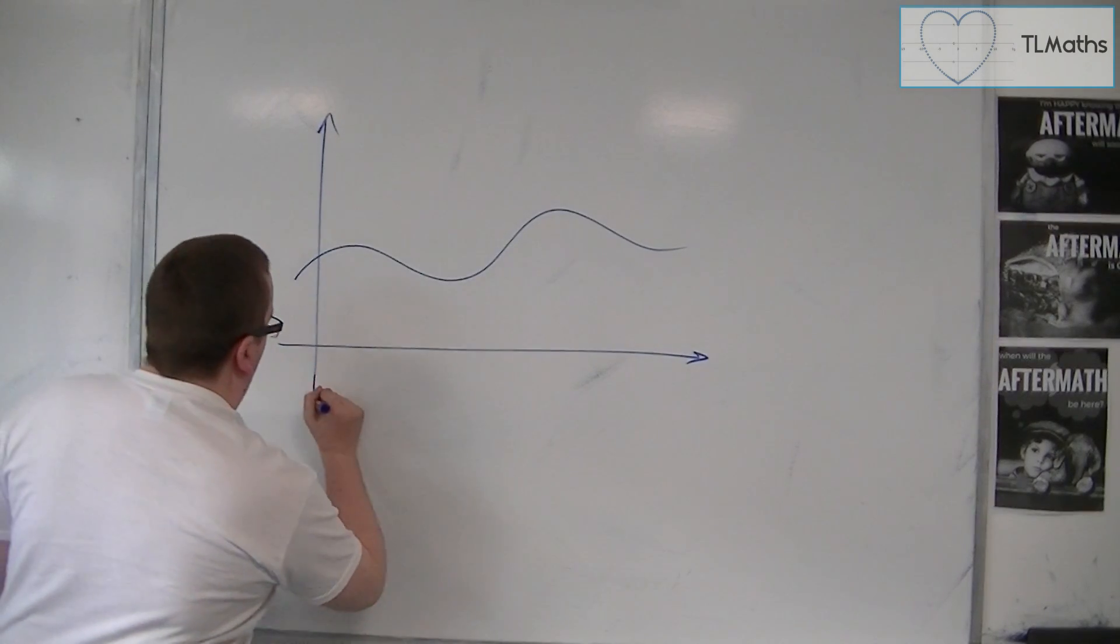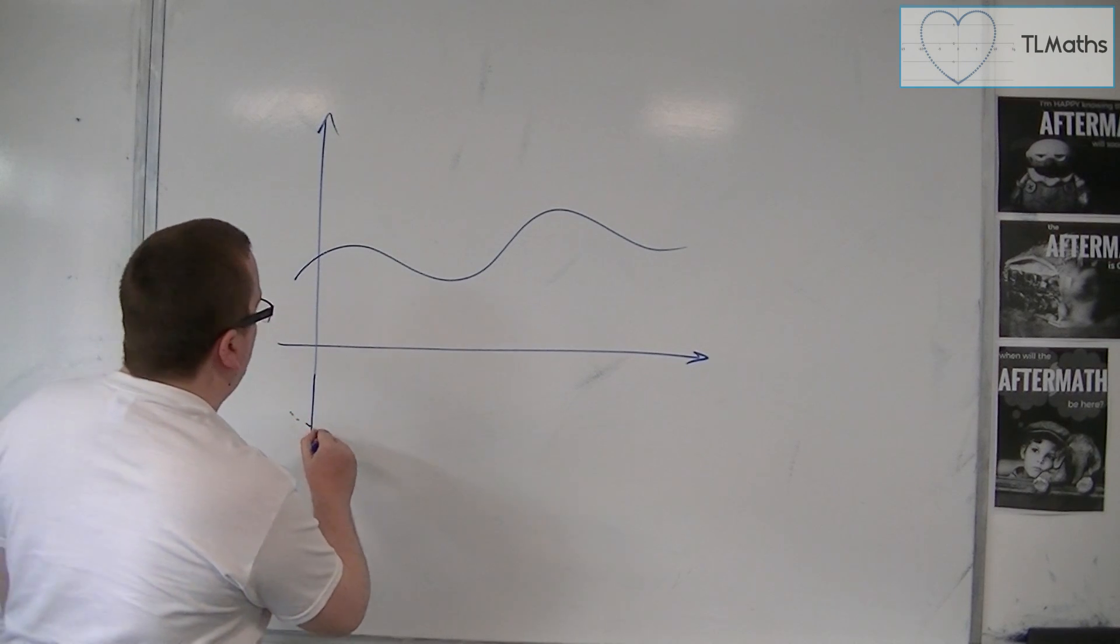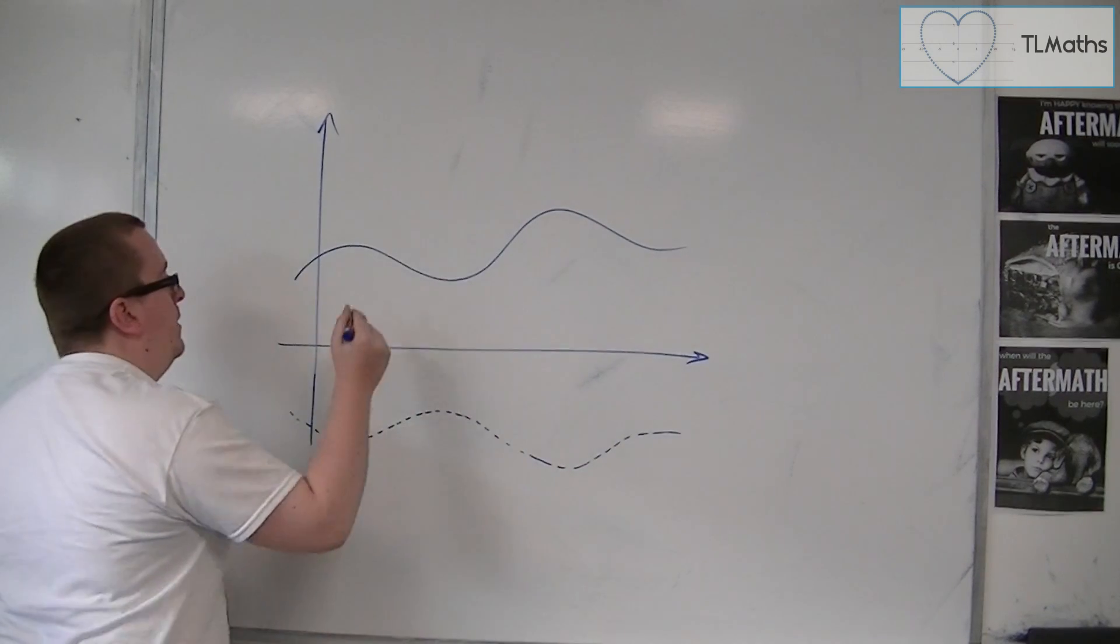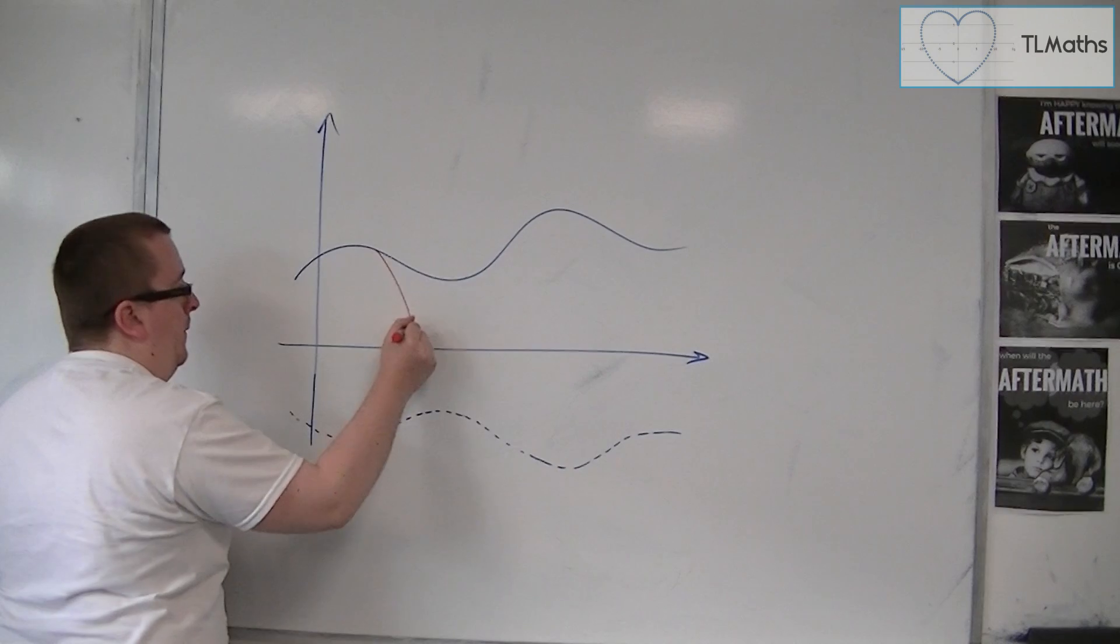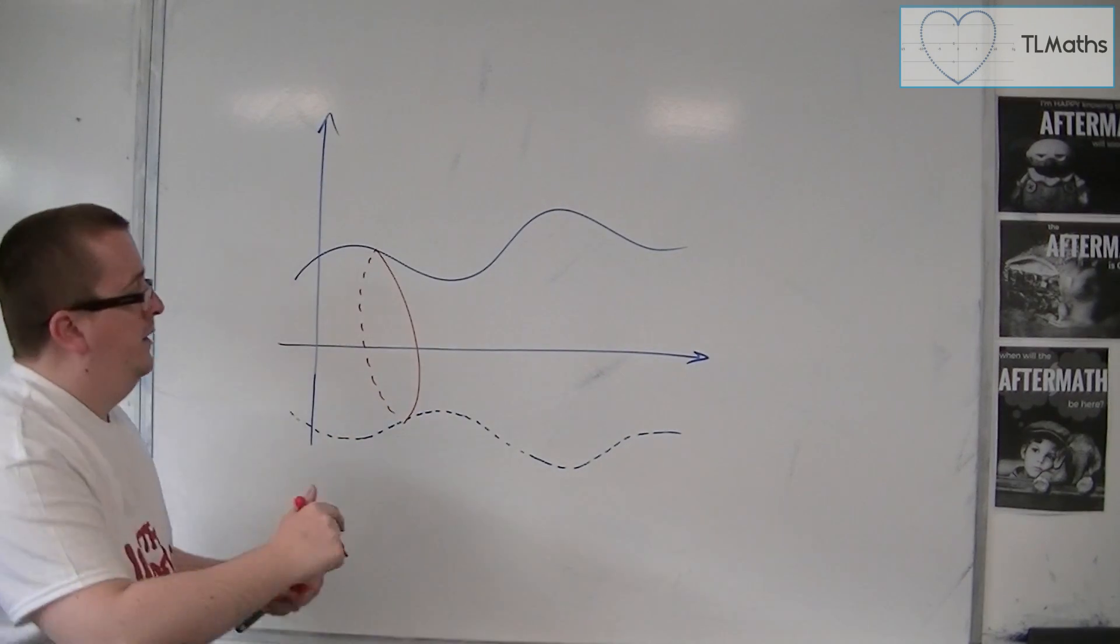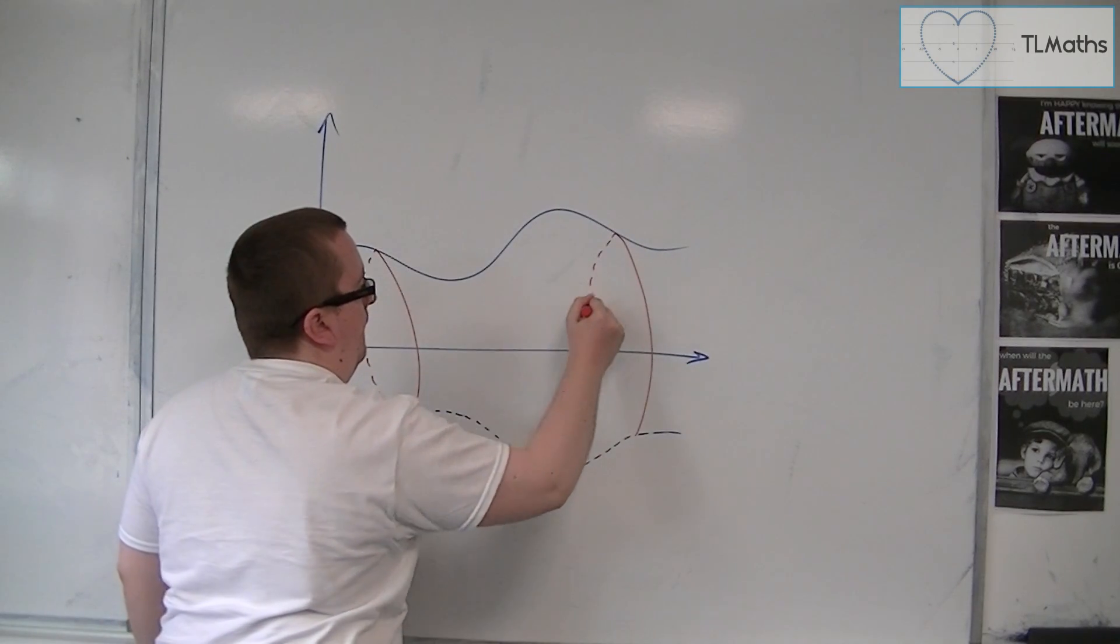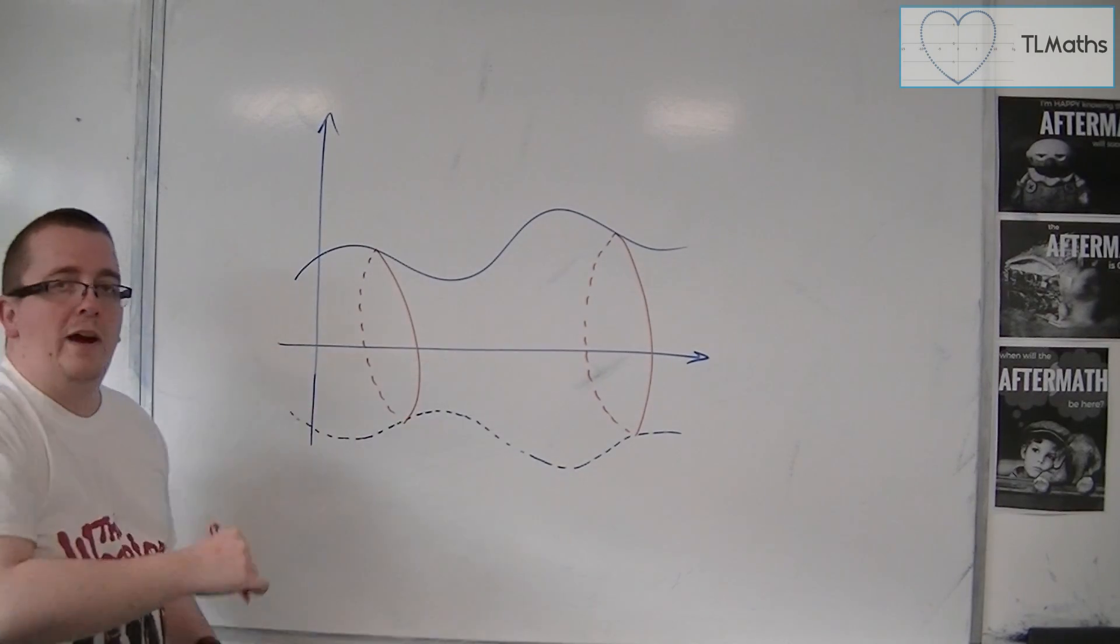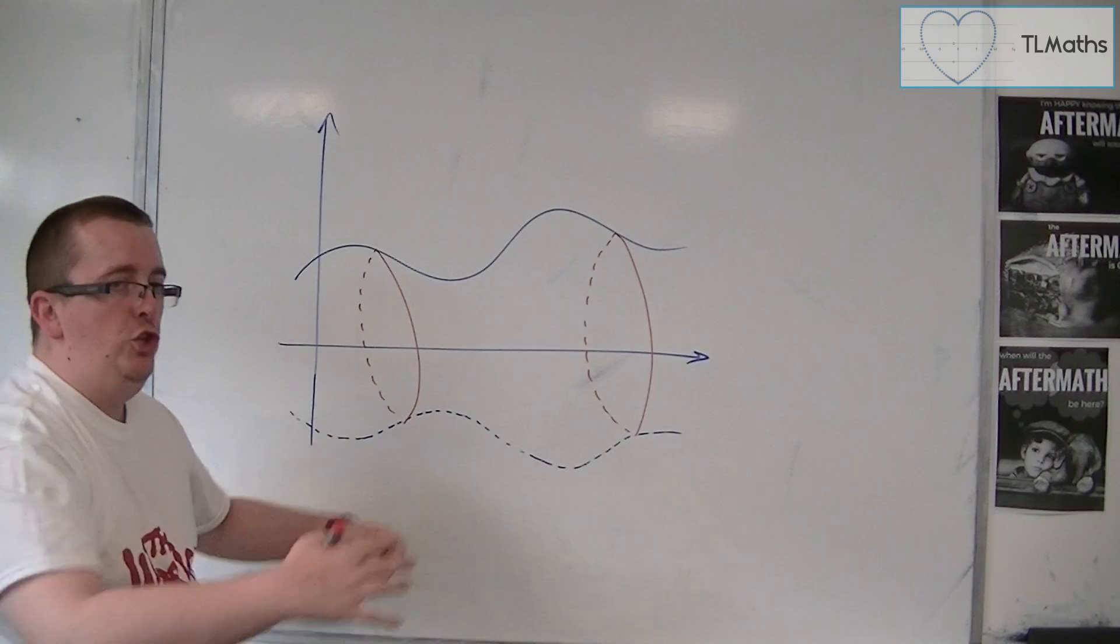What we're going to find is we get a shape that goes all the way round. It comes out of the board, goes all the way round and creates this kind of rippling tube shape.